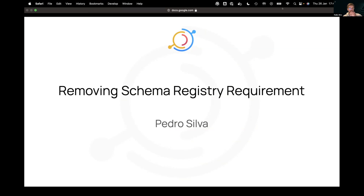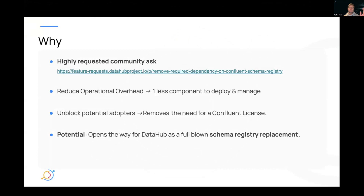One of the things that we are looking for is to remove schema registry entirely as an external component to DataHub. The reason why we want to do this is because it's a highly requested community task — it reduces operational overhead, unlocks some of our adopters, particularly because it removes the need for a Confluence license to deploy DataHub in production in certain scenarios. And as a future bonus, it opens the way for DataHub to actually become a full-on, complete schema registry replacement.